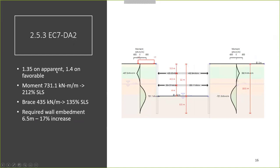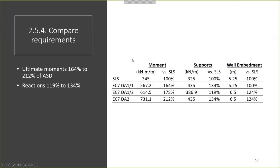Looking at DA2, where there's a 1.35 factor on permanent loads and 1.4 on favorable resistances, the moment goes up to 212% of SLS, while the brace reaction goes to 135%, and the wall embedment only increases by 17% versus the SLS case. This illustrates that Eurocode 7 results exhibit quite a large scatter in wall moments over the SLS case.